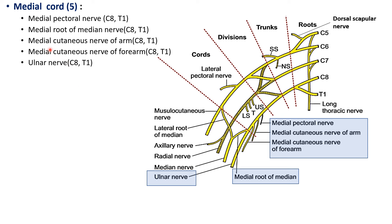The five branches of the medial cord are: medial pectoral nerve, medial root of median nerve, medial cutaneous nerve of arm, medial cutaneous nerve of forearm, and ulnar nerve. Their root value is C8 and T1, because the medial cord is the continuation of the anterior division of the lower trunk, formed by union of ventral rami of C8 and T1. The median nerve, having contributions from both lateral and medial cords, has root value C5, C6, C7, C8, and T1 — all ventral rami contributing to the brachial plexus.